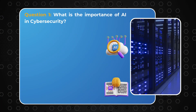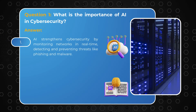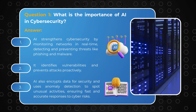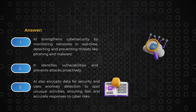Question 1: What is the importance of AI in cybersecurity? Answer: AI strengthens cybersecurity by monitoring networks in real-time, detecting and preventing threats like phishing and malware. It identifies vulnerabilities and prevents attacks proactively. AI also encrypts data for security and uses anomaly detection to spot unusual activities, ensuring fast and accurate responses to cyber risks.